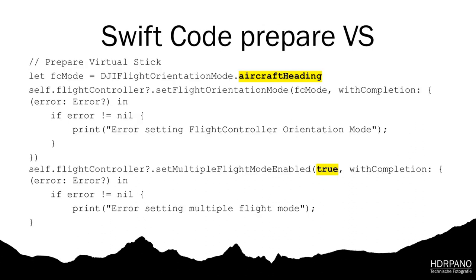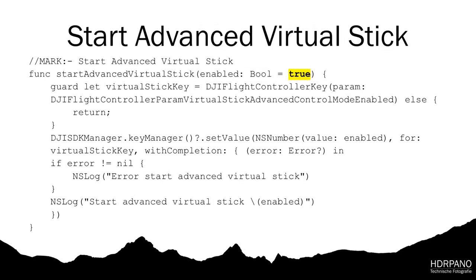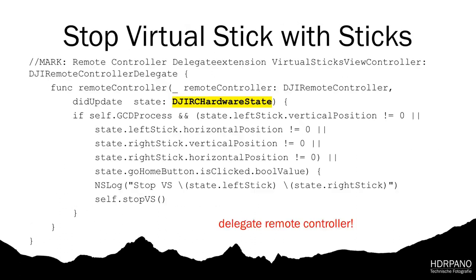Before we go into virtual stick mode, we have to prepare it. The DJI flight orientation mode has to be set to aircraft-headed, and we have to enable multiple flight mode. Then we can start the normal virtual stick mode and also the advanced virtual stick mode. It's important to use both for windy conditions — only in advanced virtual stick mode do you have wind compensation. With this method you can also check if virtual stick is already enabled.